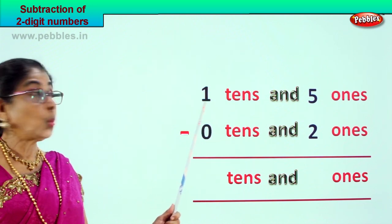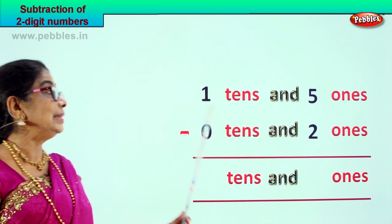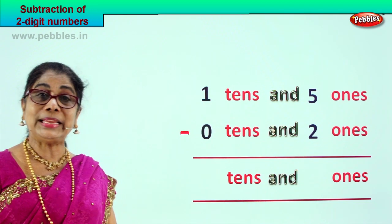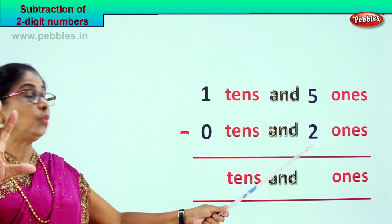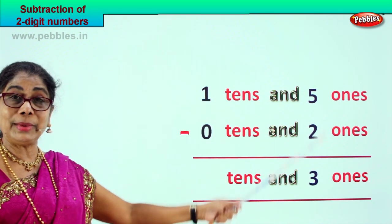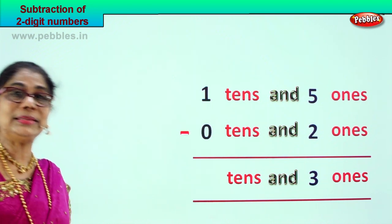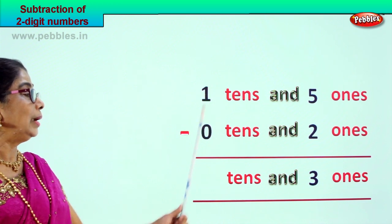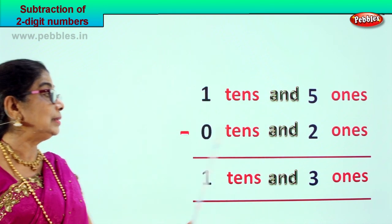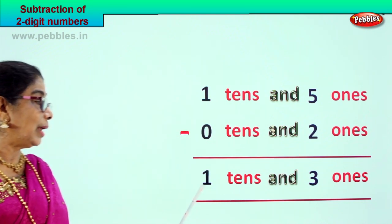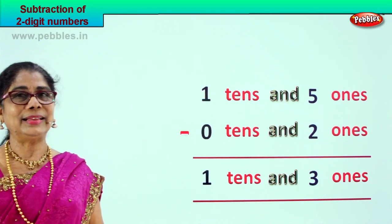Look what you have here. 1 ten and 5 ones take away 0 tens and 2 ones — that is 15 take away 2. Let's do the ones first: 5 ones take away 2 ones — your answer is 3 ones. 5 minus 2 is 3. Then 1 ten minus 0 tens — answer is 1 ten. 1 take away 0 is 1. So 1 ten and 5 ones minus 0 tens and 2 ones gets you 1 ten and 3 ones. Did you enjoy?